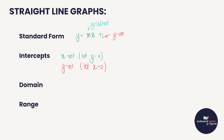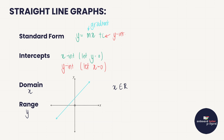A straight line also has a domain and a range. Domain is the x-values for which the function exists, and range is the y-values. Looking at the graph, the arrows tell us it goes on forever in both directions. So for a straight line, the domain is simply x ∈ ℝ — x is an element of the real numbers, or equivalently between −∞ and +∞. Exactly the same is true for the range: y ∈ ℝ.